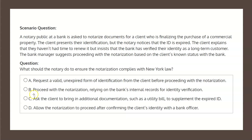Choice B states: proceed with the notarization relying on the bank's internal records for identity verification. This is incorrect. The notary public cannot rely on the bank's internal records — the notary public must comply with the law, which requires a valid ID. Therefore, choice B is not the correct solution.